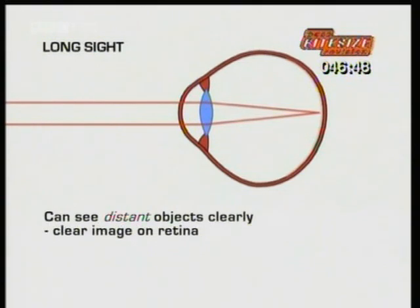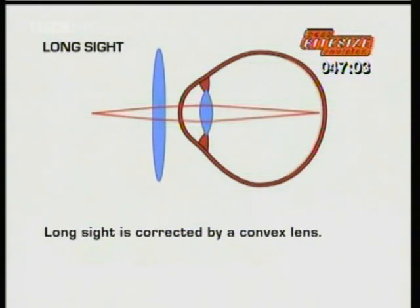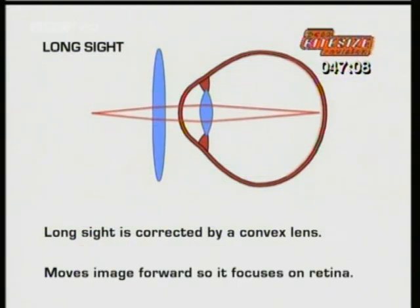People with long-sight can see distant objects clearly because their lens can focus a clear image on the retina, but can't see close objects clearly because the image falls behind it. Long-sight is corrected by using a convex lens in glasses or contact lenses, to move the clear image forward so it focuses on the retina.